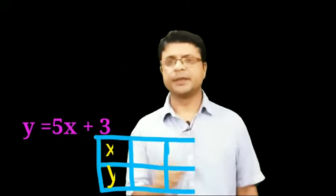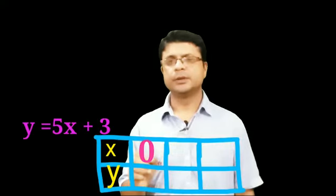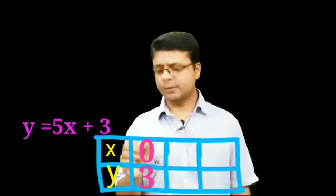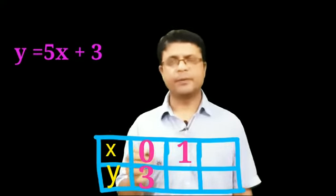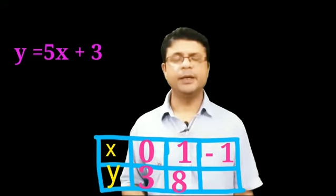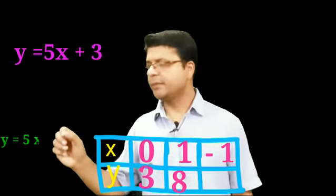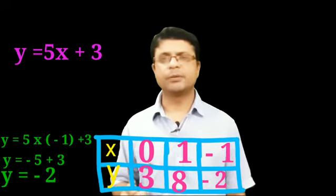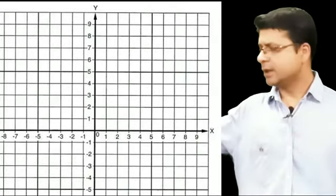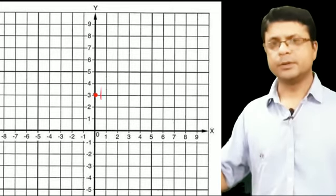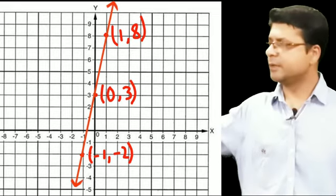Now let us make the solution table. If x = 0, y = 0 + 3 = 3. If x = 1, y = 5 + 3 = 8. If x = −1, y = −5 + 3 = −2. We then draw the x-axis and y-axis, plot these points, and observe that we get a straight line — confirming the equation is linear.